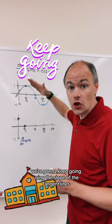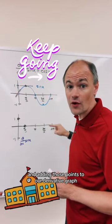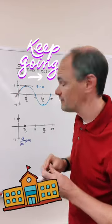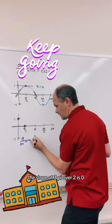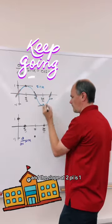We're gonna keep going using the slope of the tangent lines and adding those points to our derivative graph. The slope at pi is negative 1, the slope at 3 pi over 2 is 0, and the slope at 2 pi is 1.